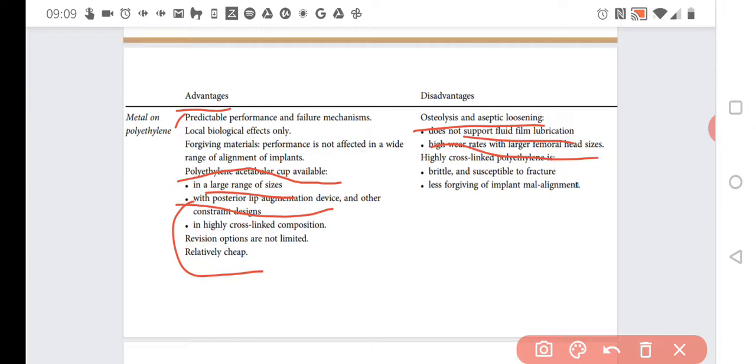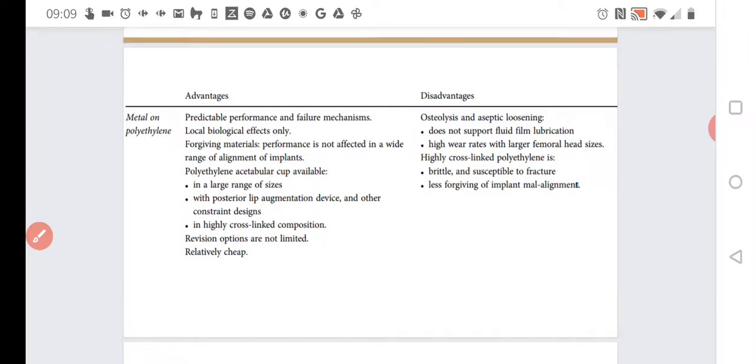However, highly cross-linked polyethylene, as we discussed in the lecture about polymers—polymers naturally usually are not stiff. We can achieve stiffness by cross-linking, by creating the nets. But increasing the stiffness also increases brittleness. And generally this is less forgiving of implant misalignment.